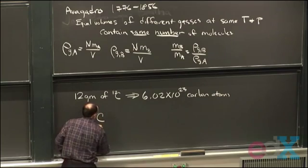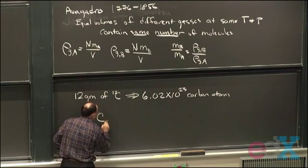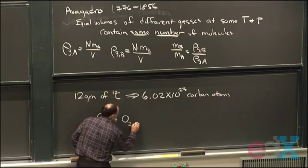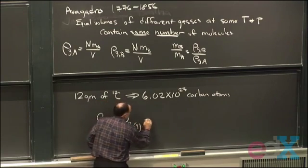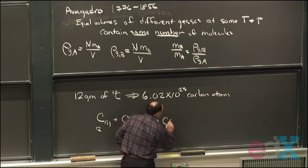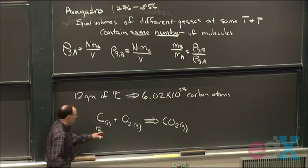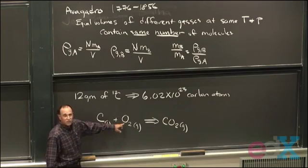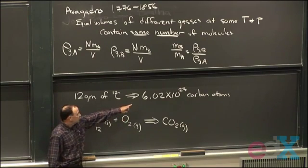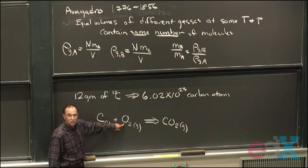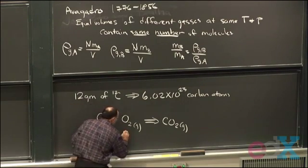So, if I take 12 grams of carbon, solid, and consume it with just sufficient oxygen to burn it completely to CO2, then all I need to do to get the mass of 6.02 times 10 to the 23rd oxygen molecules was just to measure the mass consumed. And of course, you know this is going to be 32 grams.